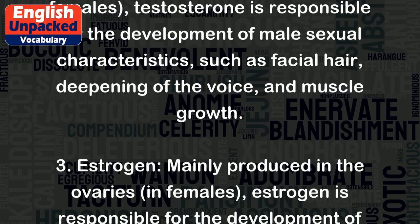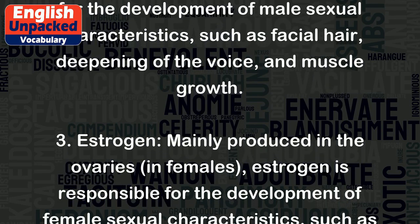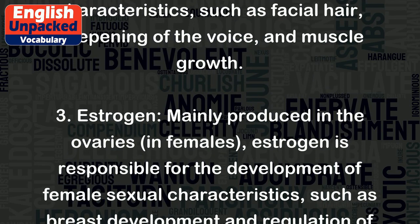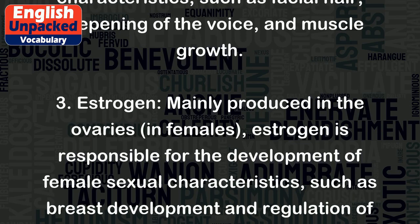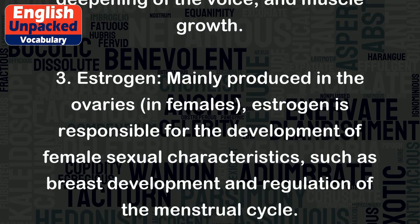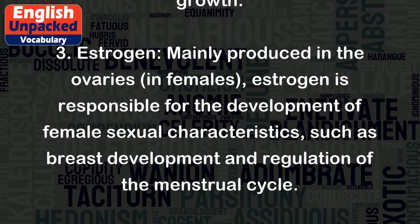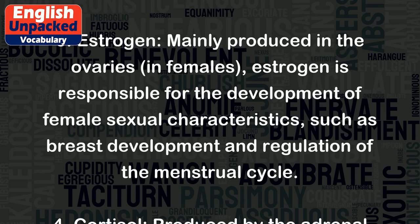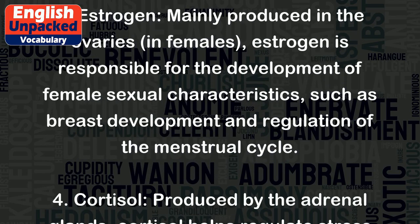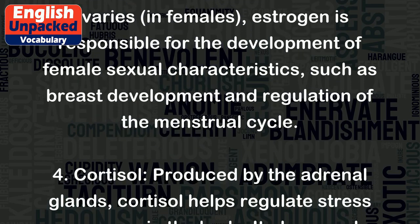3. Estrogen. Mainly produced in the ovaries in females, estrogen is responsible for the development of female sexual characteristics, such as breast development and regulation of the menstrual cycle.